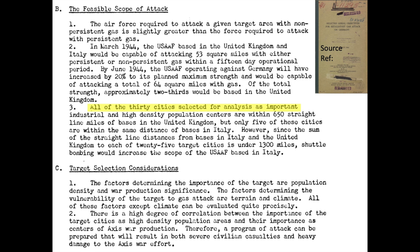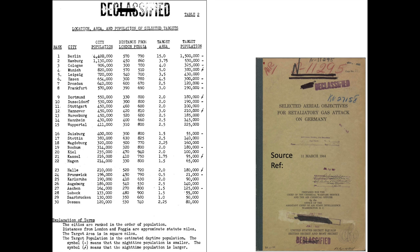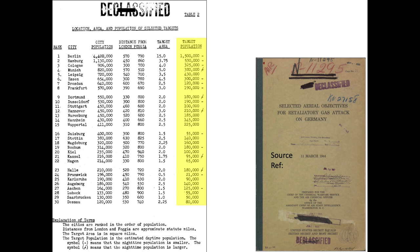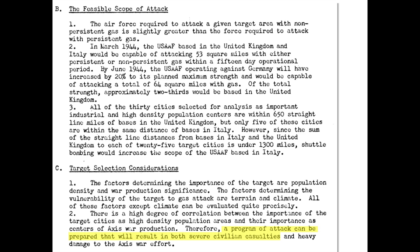30 German cities were selected for the gas attack. These 30 cities were within a 650-mile radius of U.S. bases in Great Britain and Italy. Table 2 of the report lists the 30 German cities identified for gassing. The first column is the city's rank based on its population; the second column is the German city name; the third column is the city's population; the fourth and fifth columns are the distances from the German city to London or Foggia; the sixth column is the target area size in square miles to be carpet bombed by poison gas; the seventh column is the German population expected to be exposed in the target area. The targets were selected to maximize civilian casualties and disrupt the Reich's war effort. The locations of the 30 German cities identified for U.S. poison gas attack are shown on this map.